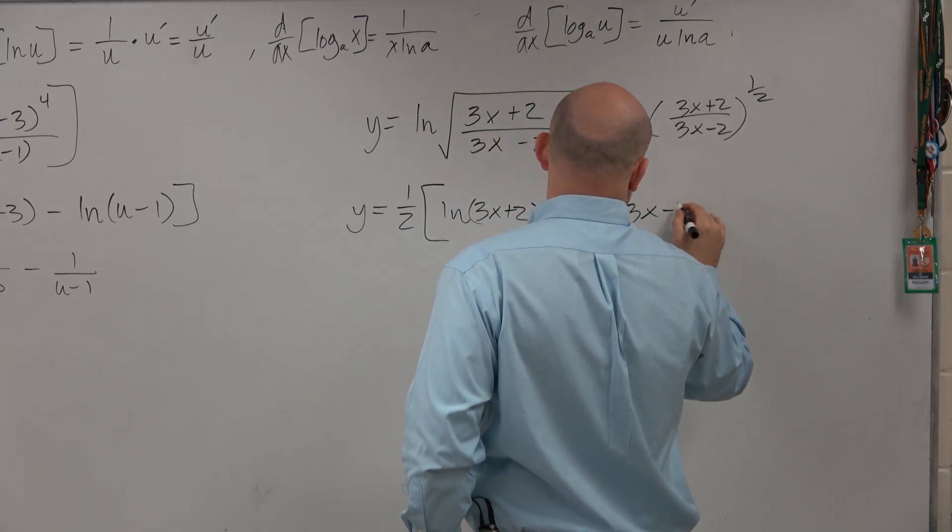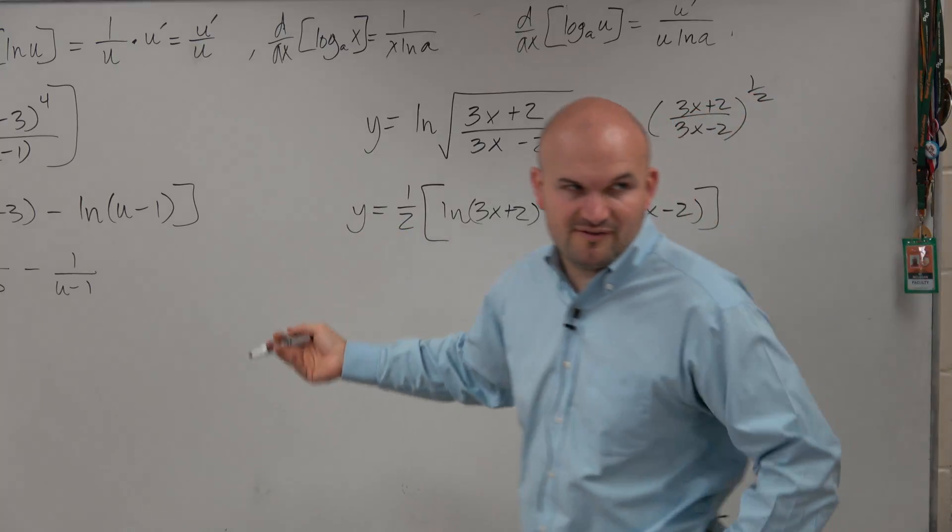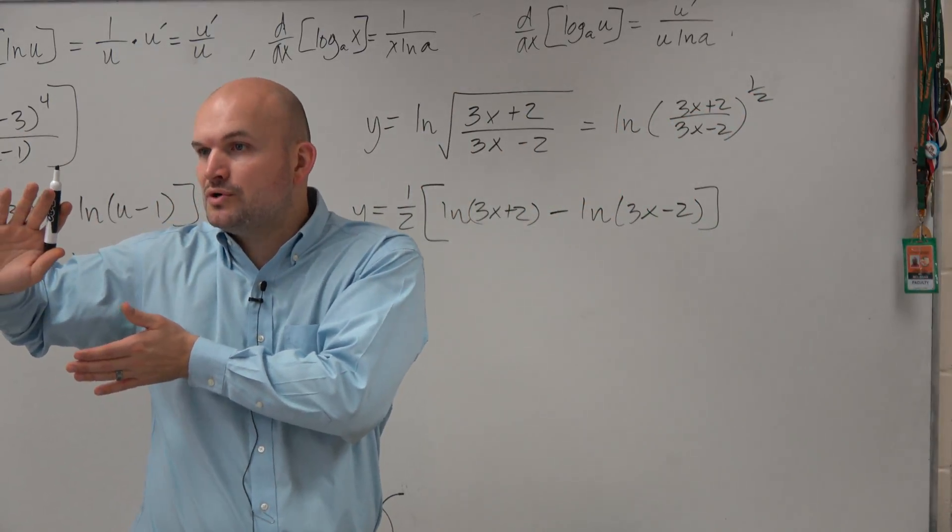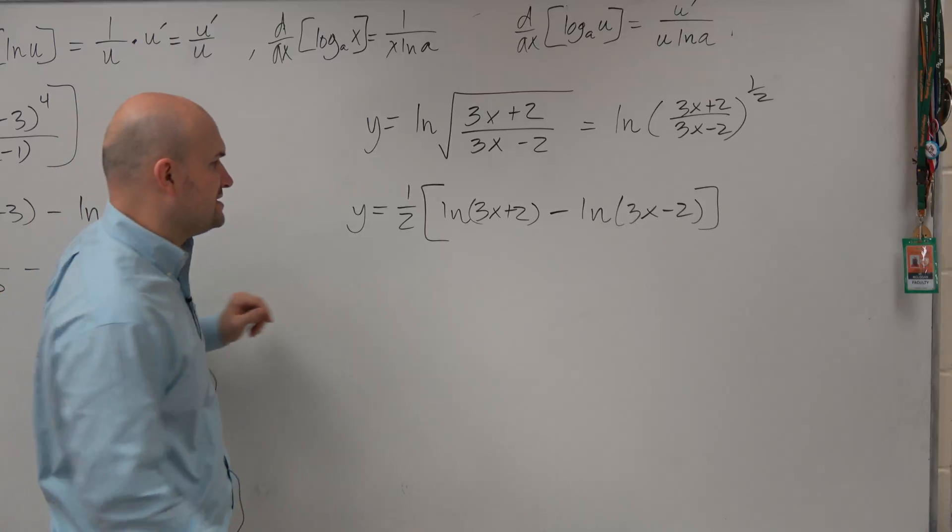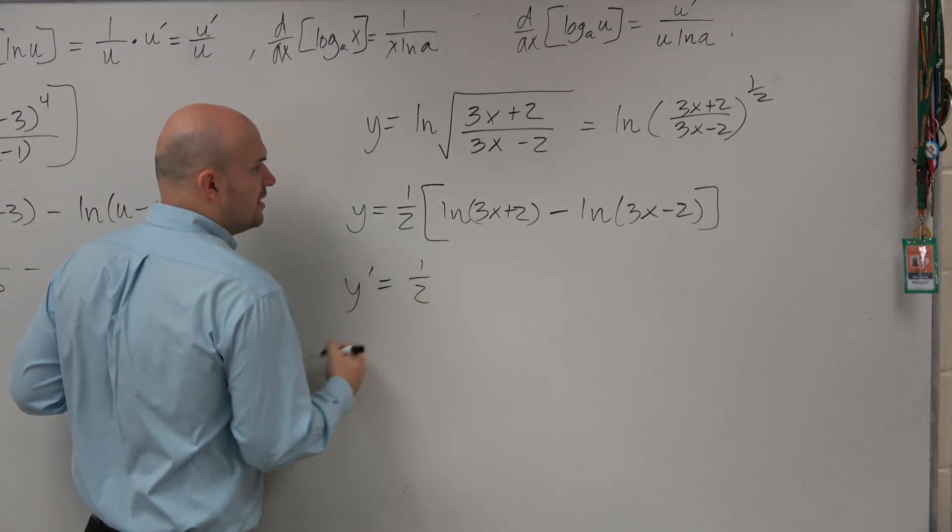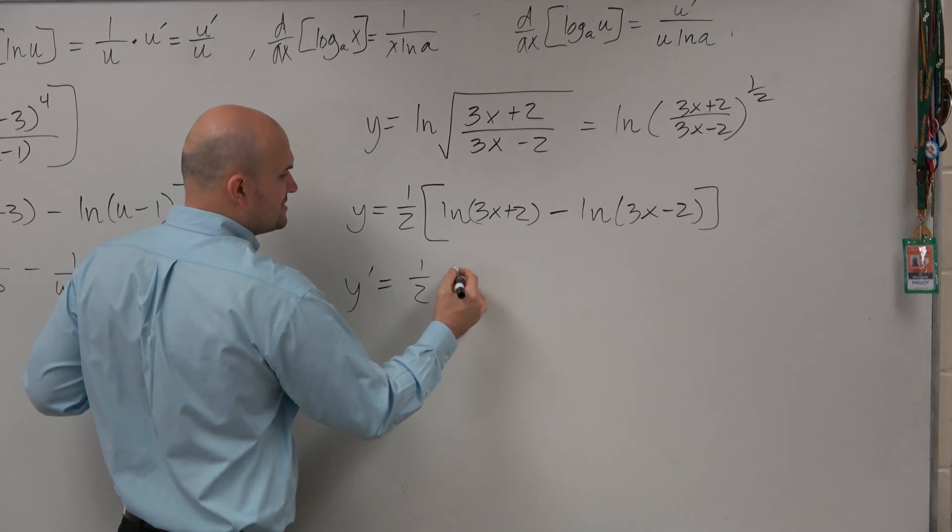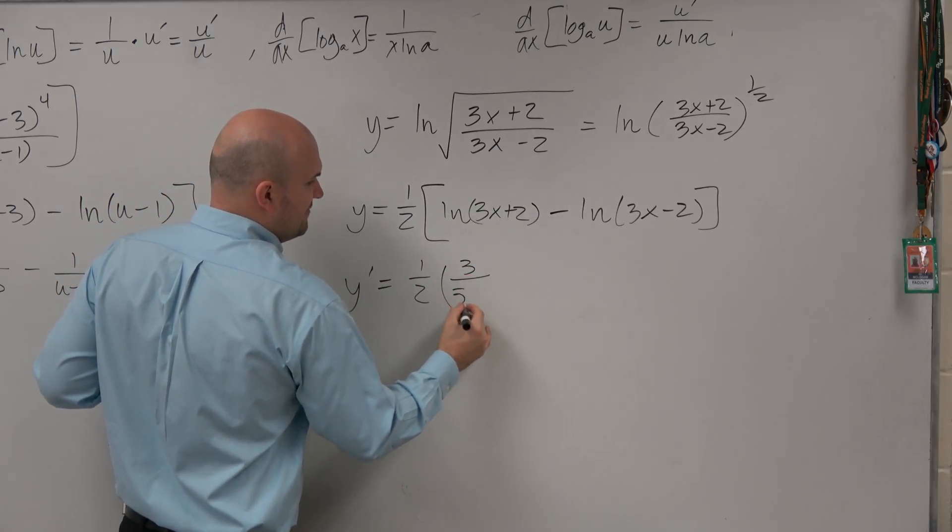The reason why I like leaving that out is because to find the derivative, I can just use the constant multiple rule and take the derivative of the inside. So my y prime is going to be one-half, then the derivative of ln of 3x plus 2. Hopefully you guys have got the hang of this.